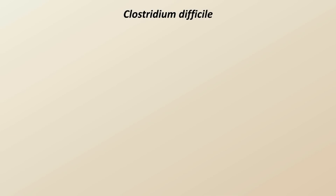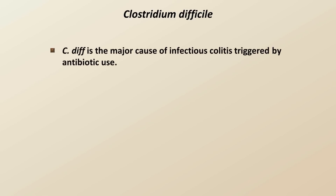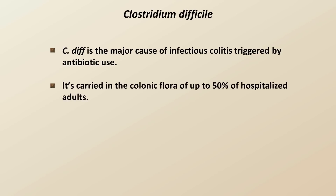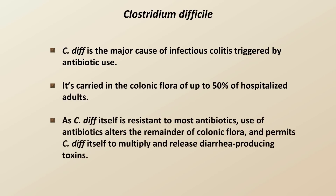I'll end the lecture talking about Clostridium difficile. C. diff, as it's more commonly known, is the major cause of infectious colitis triggered by antibiotic use. It's carried in the colonic flora of up to 50% of hospitalized adults. As C. diff itself is resistant to most antibiotics, use of antibiotics alters the remainder of colonic flora and permits C. diff itself to multiply and release diarrhea-producing toxins.